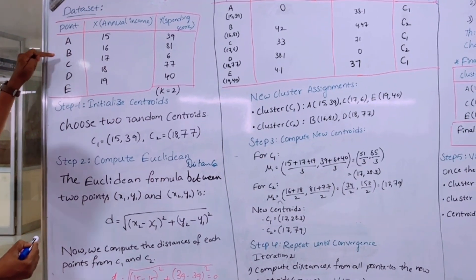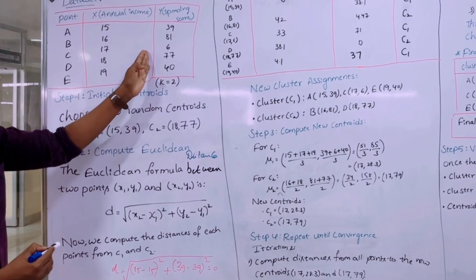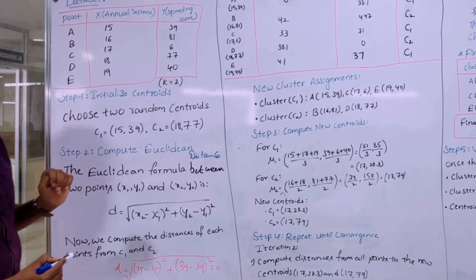It can be marked as A, B, C, D, and E. So there are two types of classifications: the annual income and the spending score.